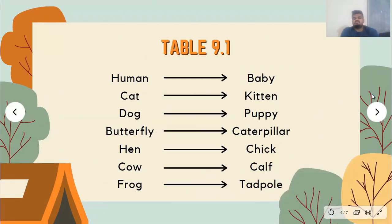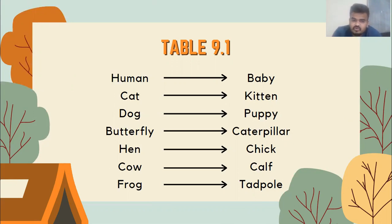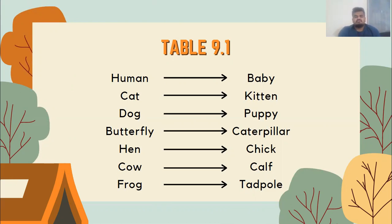Here are the young ones for those animals: for a cat it is a kitten — a kitten grows into a cat. For a dog it is a puppy. For a butterfly it comes from a caterpillar. For a cow the young one is a calf, which you can also see in villages. For a frog, the young one is a tadpole, sometimes also called a froglet. These are the names being asked in Table 9.1.